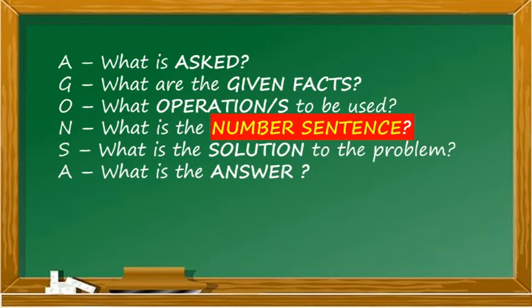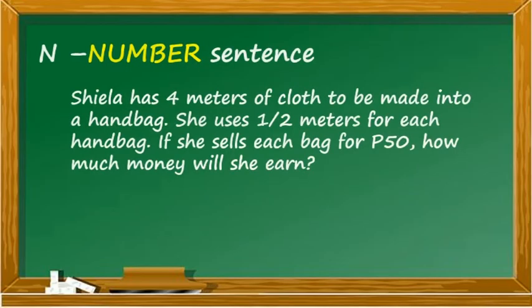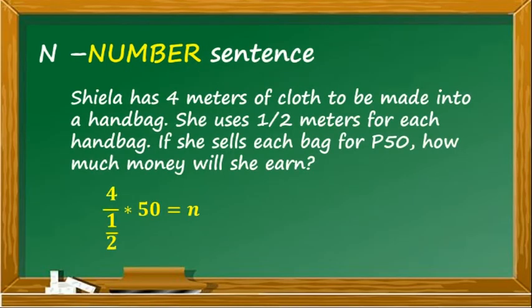For the number sentence, we have to apply the indicated operations. 4 divided by 1 half, then multiply it with 50 afterwards, it will give us the value of n.